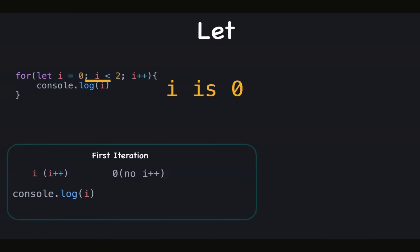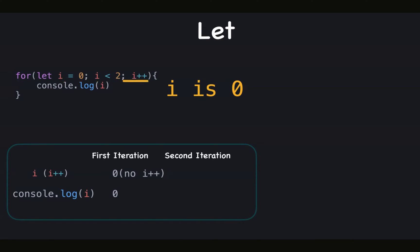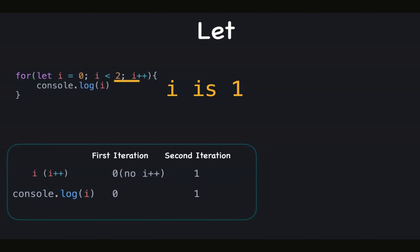In the first iteration, i is zero and there is no i++ — zero less than two is true, so it enters the block and console.log gives zero. In the second iteration, i is zero and i++ gives one — one less than two is true, so it enters the block and console.log gives one. In the next iteration, i is one and i++ gives two — two less than two is false, so execution stops. The output for this loop is zero and one.